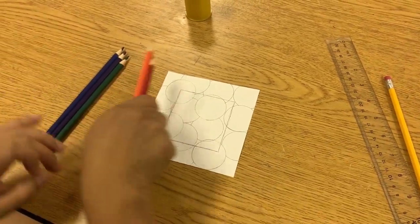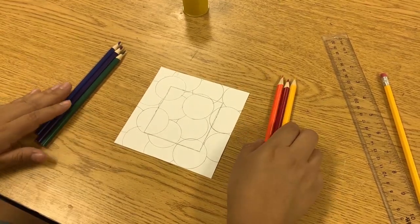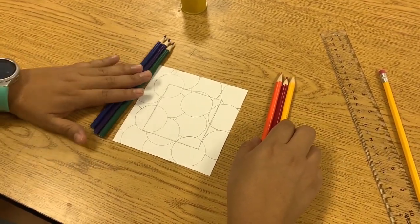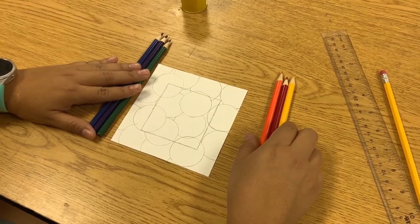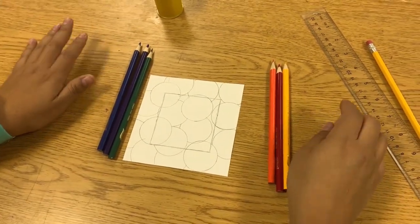So these three colors - red, orange, and yellow - are our warm colors. These three colors - green, purple, and blue - are our cool colors. Now you can decide where you want your certain types of colors to go.